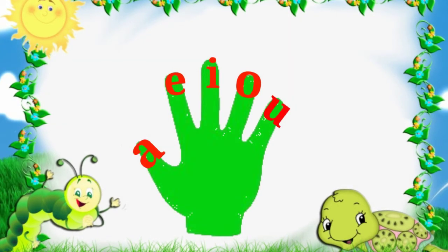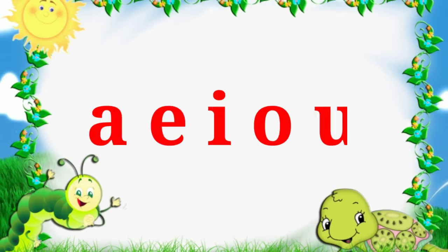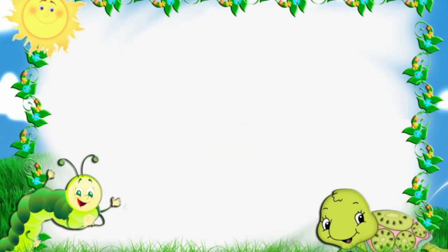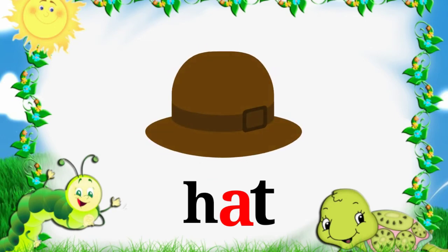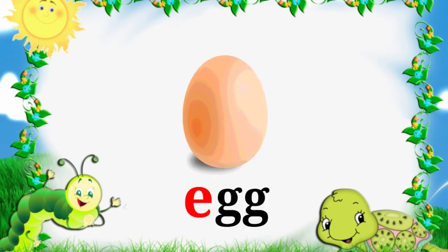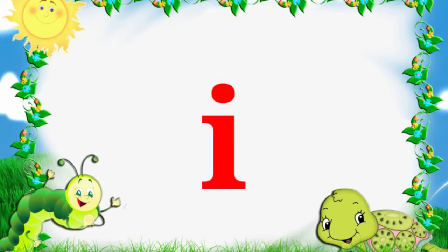What are these sounds? The first vowel is 'A' as in apple, 'A' as in hat. The second vowel is 'E' as in act, as in bed.